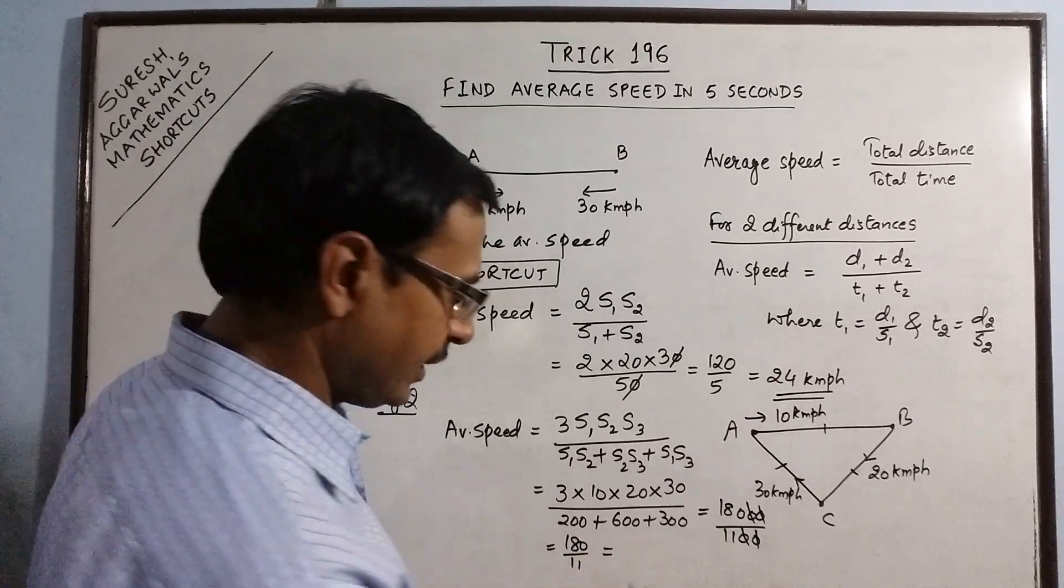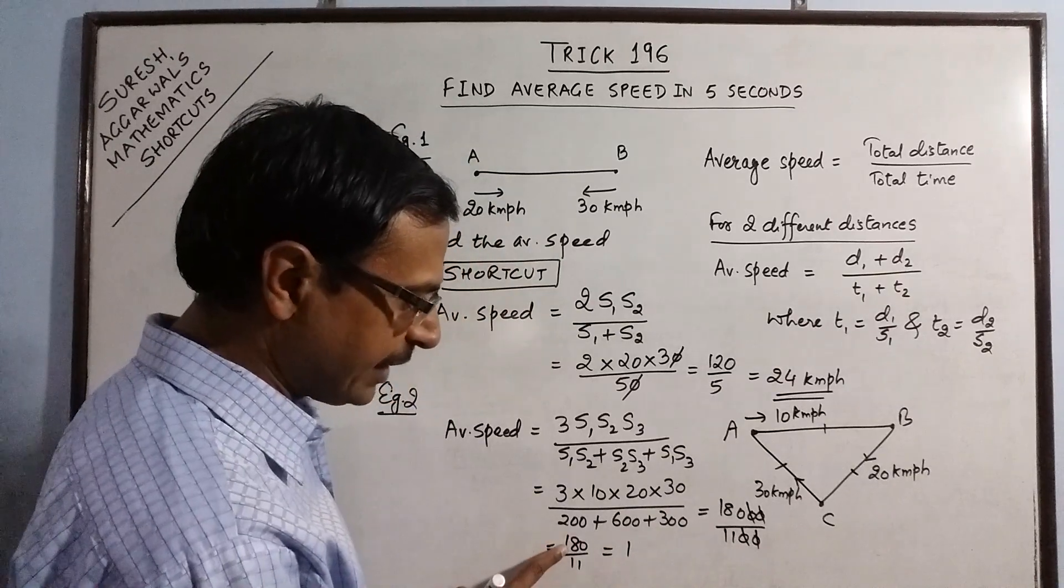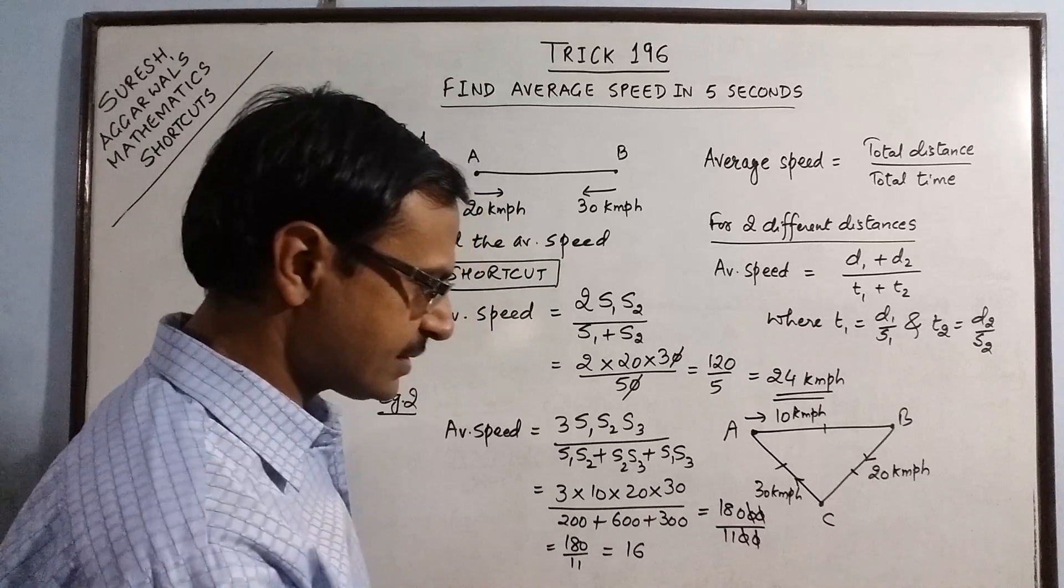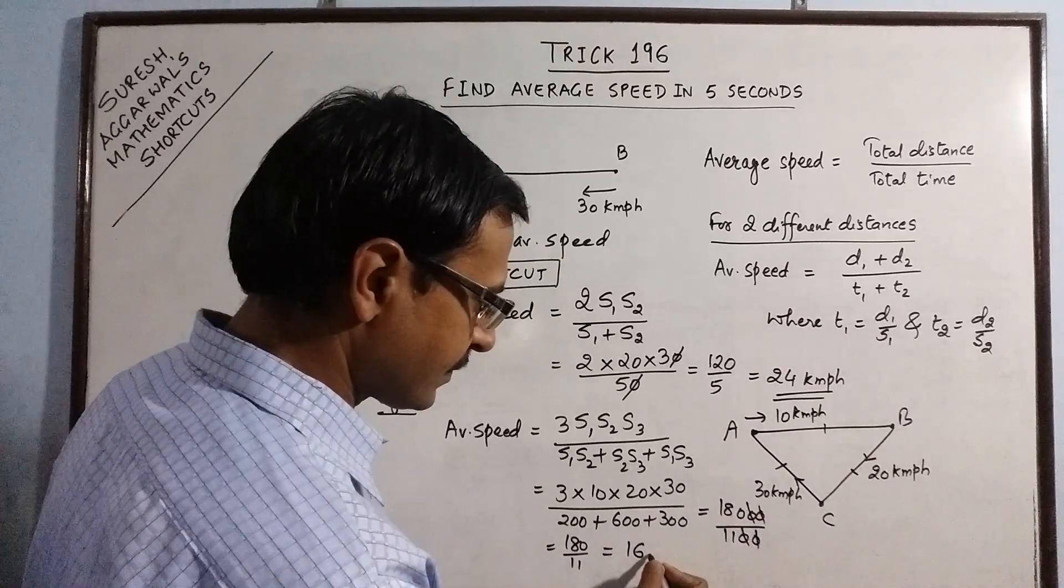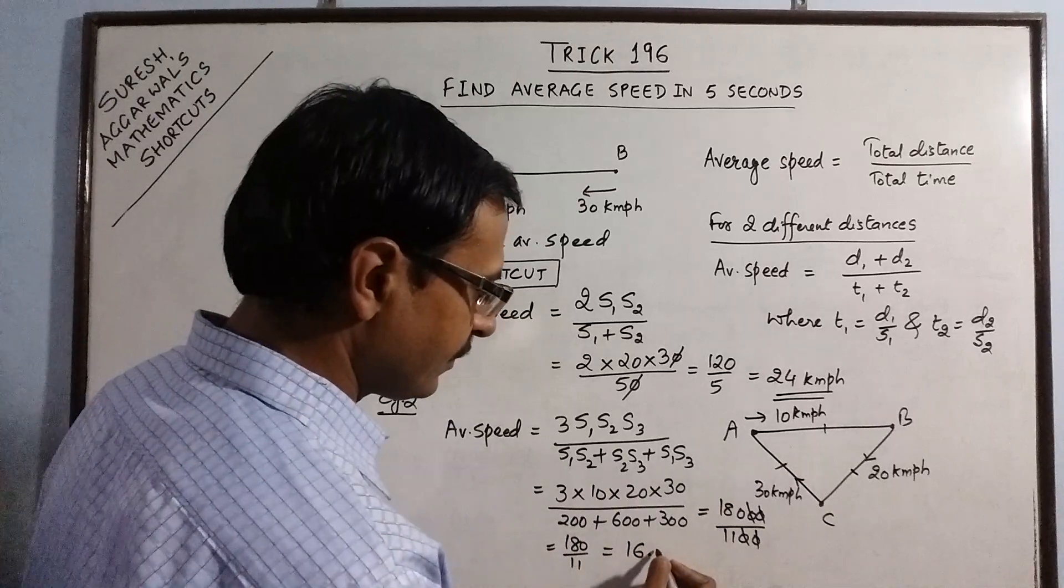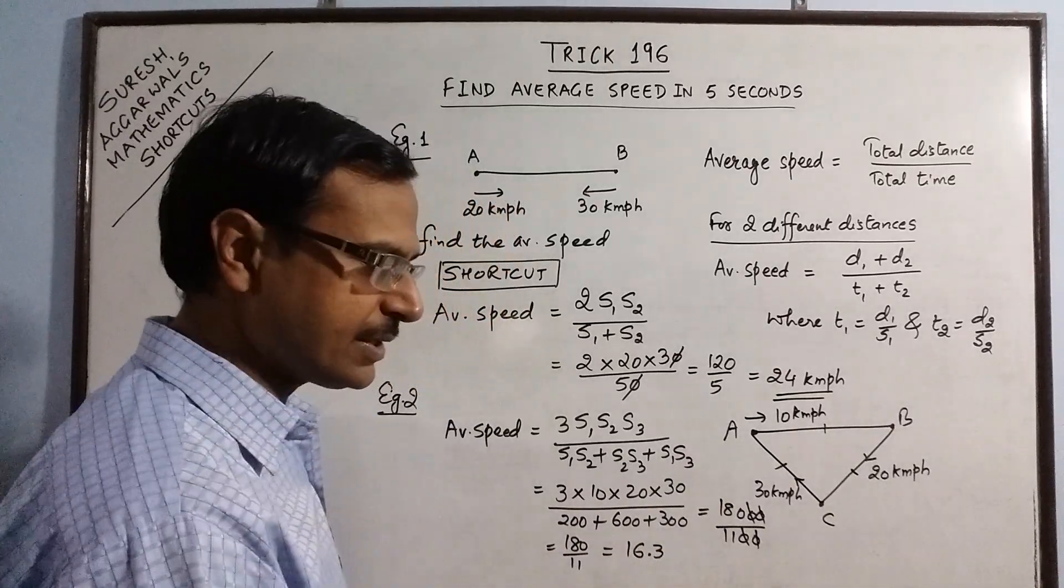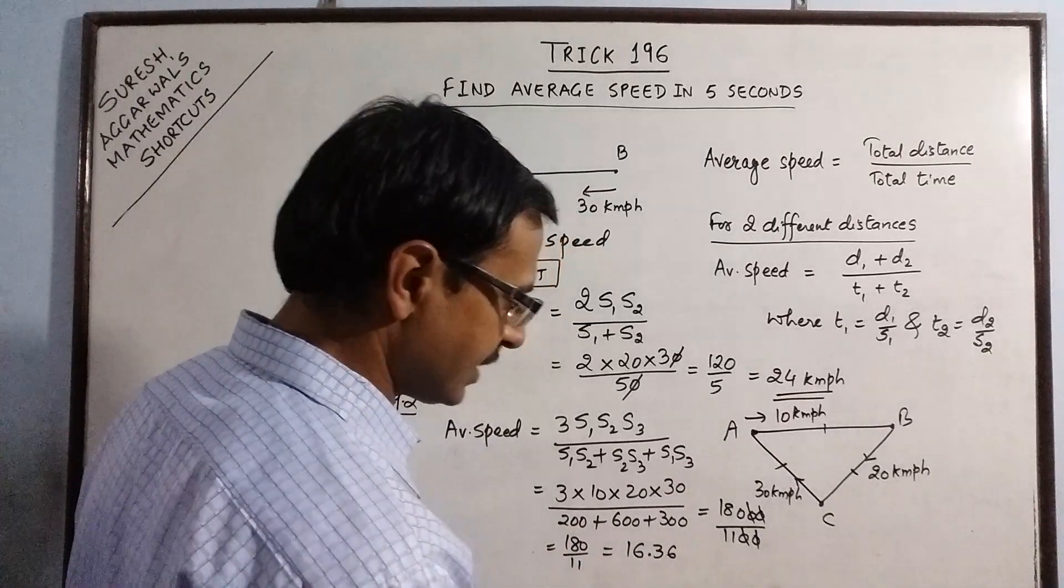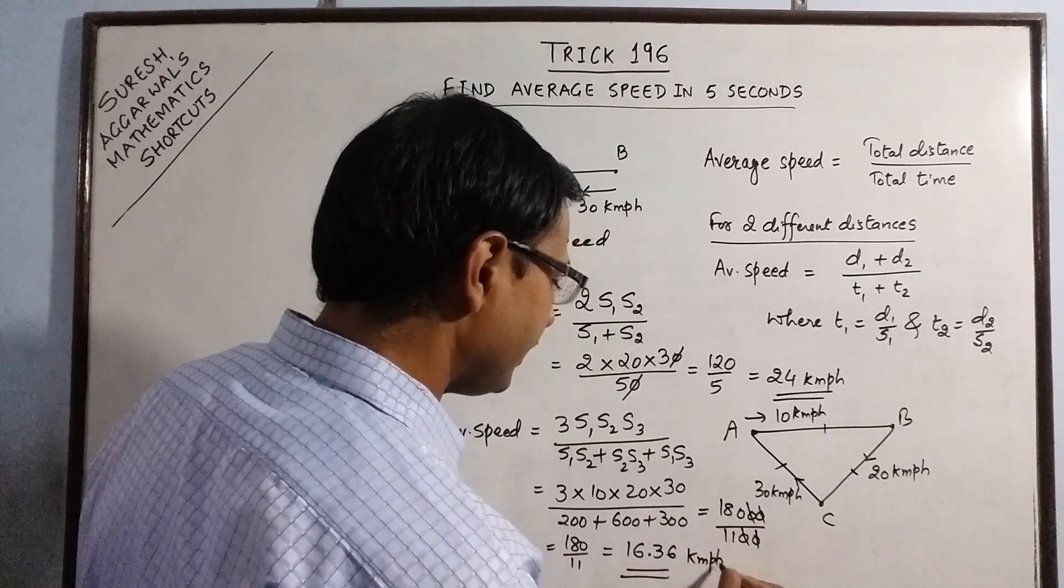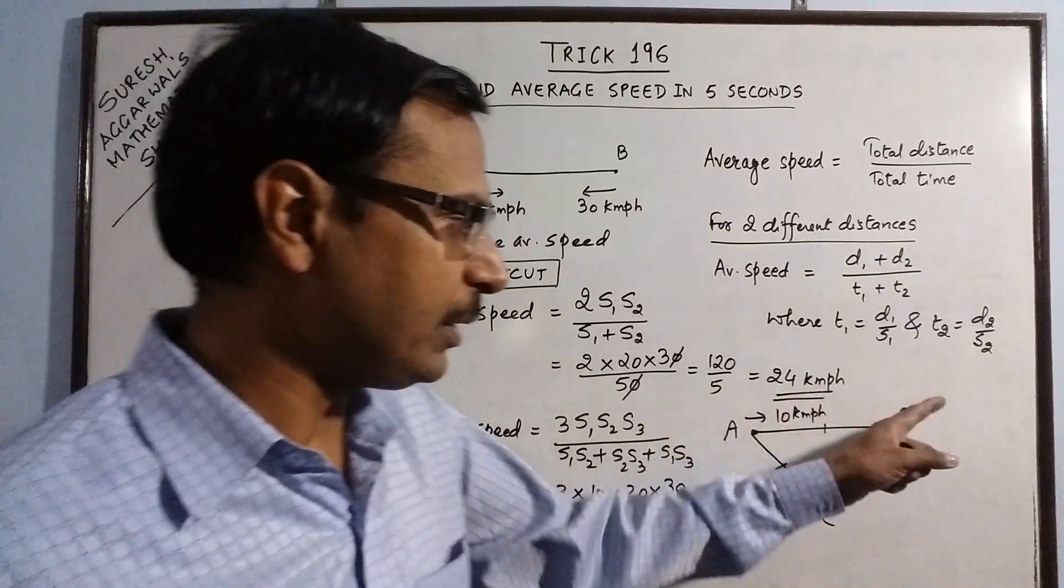So, 11 into 16 is 176. Left behind with 7. So 70. 11 into 6 is 66. 4 remaining. Decimal 40. 3, 33. So, 7 remaining. 6. So, this is 16.36 km per hour.